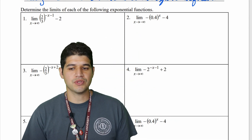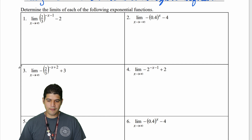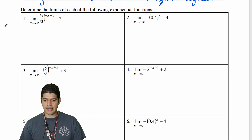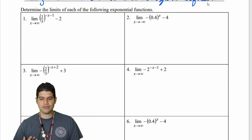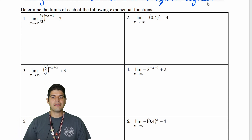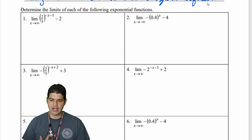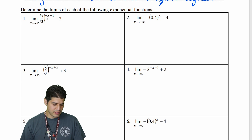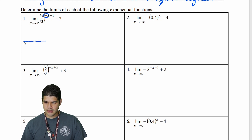We have eight examples coming up. What I'm going to do as I start each one is spend the time to really just focus on getting the graph down first, and then the limits are going to be very, very easy. So the first thing I notice here is that I've got a horizontal reflection, and I'm going to keep that in mind as I sketch a graph.